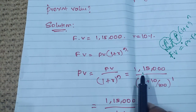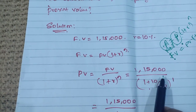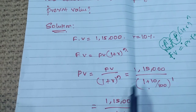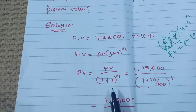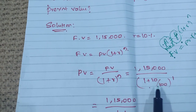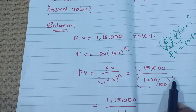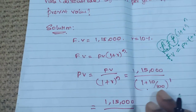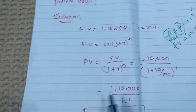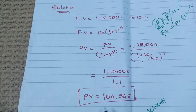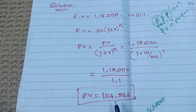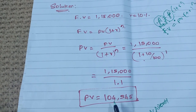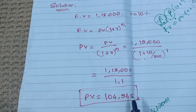Future value is one lakh fifteen thousand, as given in the problem. Substituting: Present Value = 1,15,000 ÷ (1 + 10/100)^1, where n is 1. Solving this, I am getting Present Value = 1,04,545.45.